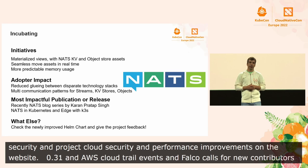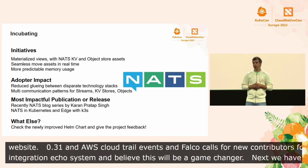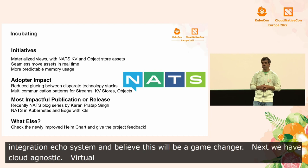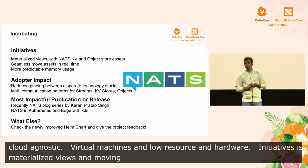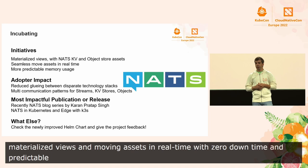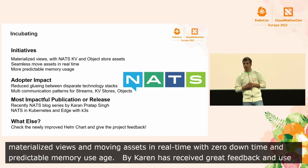Next we have NATS — a cloud-agnostic connected fabric allowing you to bridge between Kubernetes, bare metal, virtual machines, and low resource hardware. Initiatives include materialized views with key-value and object store access assets, moving assets in real time with zero downtime, and predictable memory usage. The recent blog series has received great feedback, and you can now use NATS on the edge relying on K3s. Check out the newly improved Helm chart and send your feedback to the project.